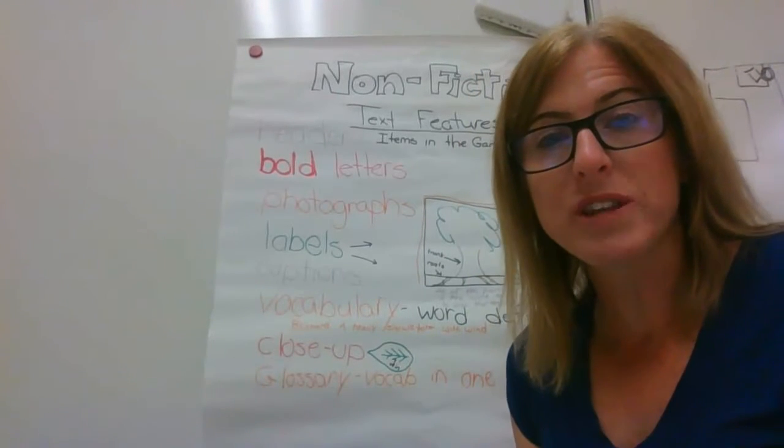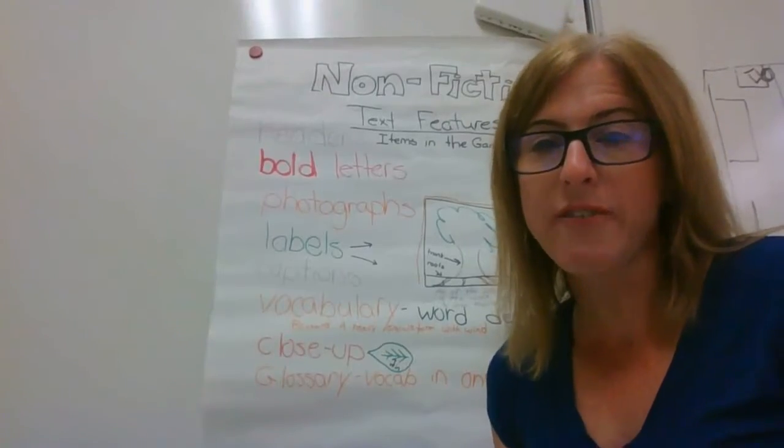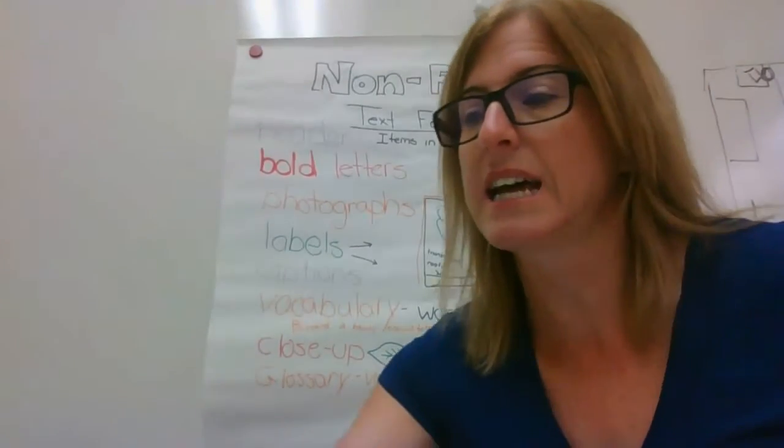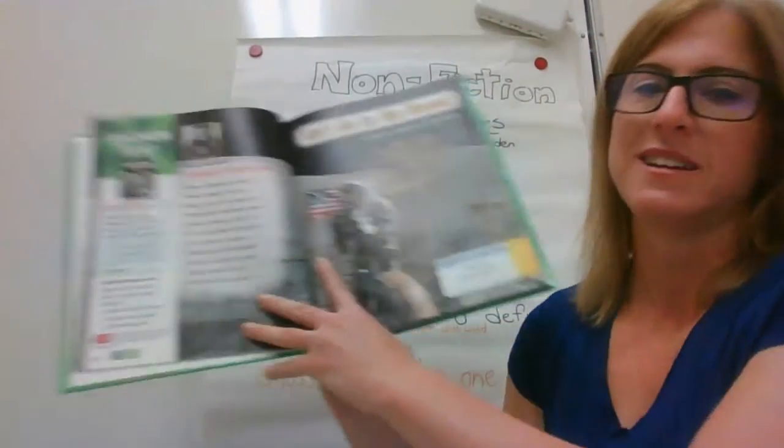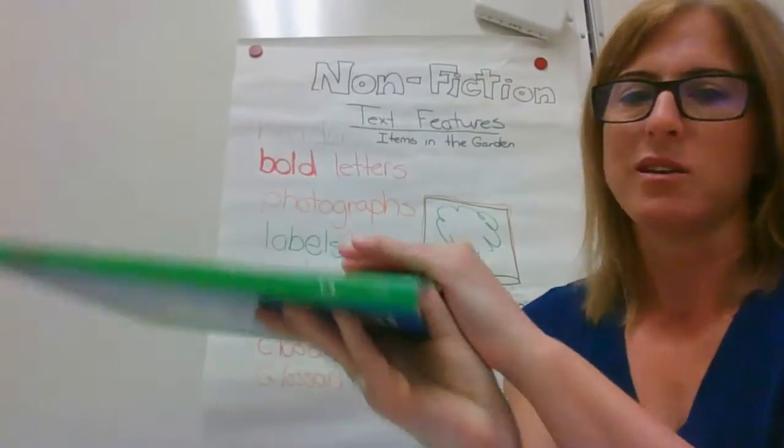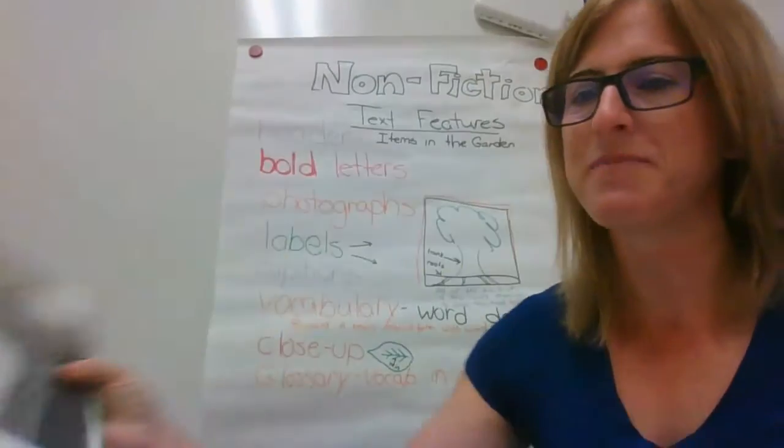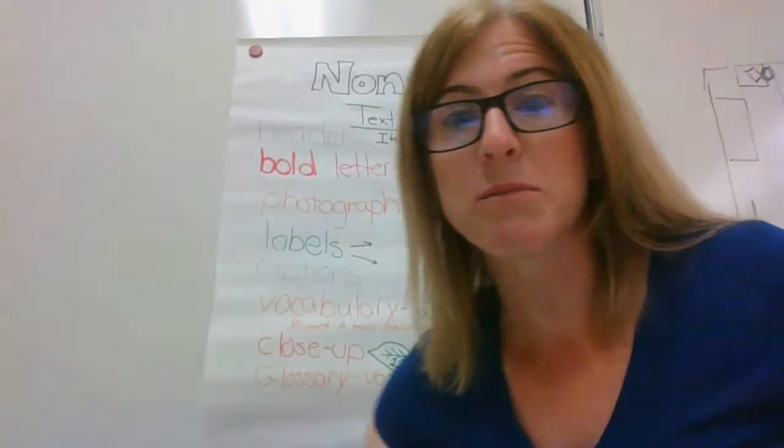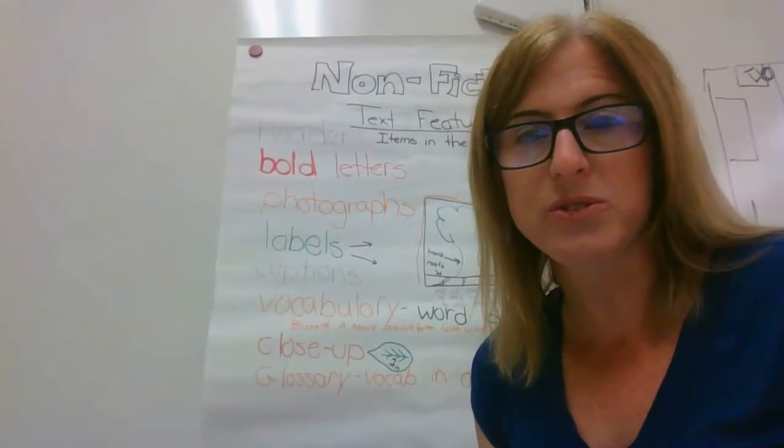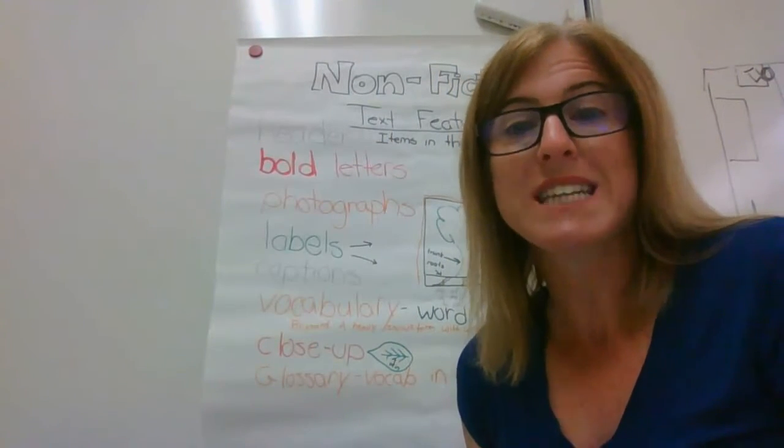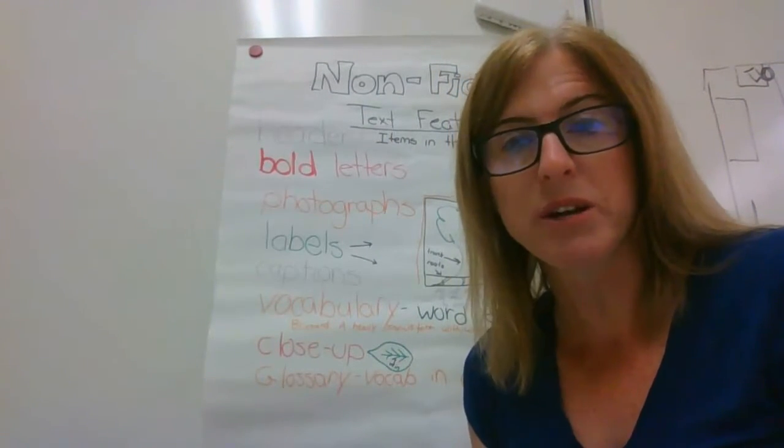So we're going to go over these text features and afterwards I want you to look at the text. Let's go to the moon which is in 1.4 of your anthology starting at page 15 and I want you to tell me what are some of the text features that the author uses in the text to help you as a reader understand.